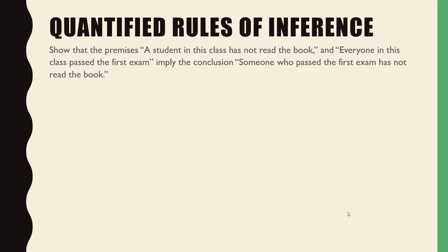Let's go back to what we were doing the other day where we were using rules of inference. We did the lion example, we did the thing with Marla being a student. So here's one that's similar. We're going to show that the following premises — a student in this class has not read the book, and everyone in this class has passed the exam — do those two things imply that someone who has passed the exam has not read the book? Sounds right, right? Let's walk through that basic idea.